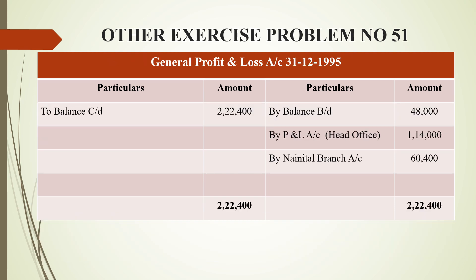To prepare the combined profit and loss account, the opening balance already given is 48,000 on the credit side. Head office profit is 1,14,000 and branch profit is 60,400. After balancing, the balance carried down is 2,22,400 rupees, with grand totals of 2,22,400 on both sides.